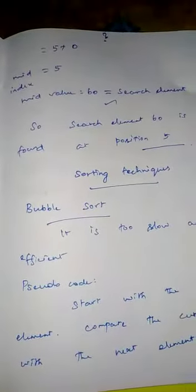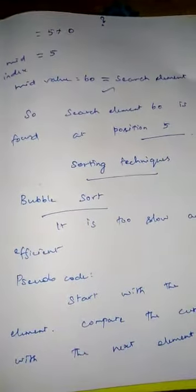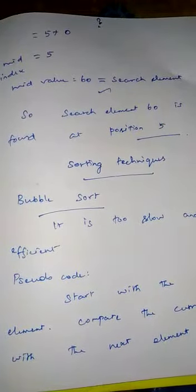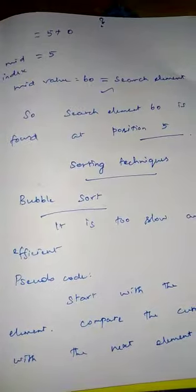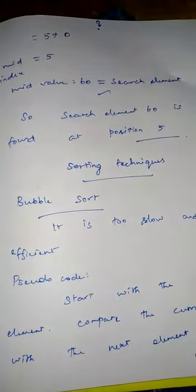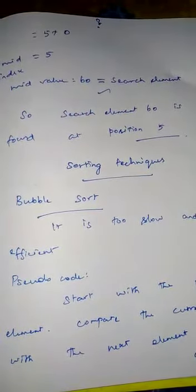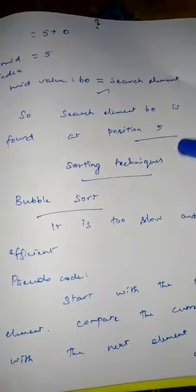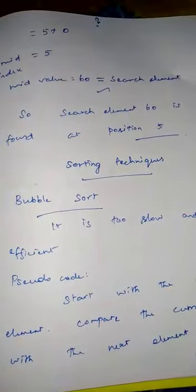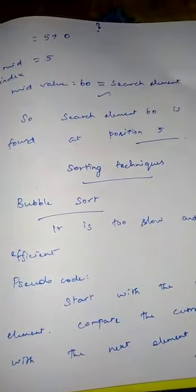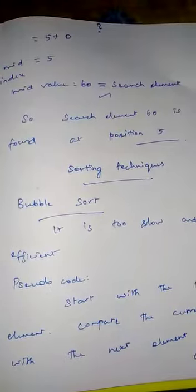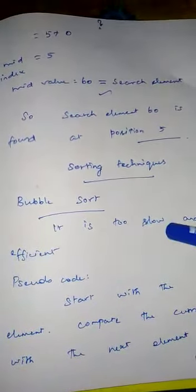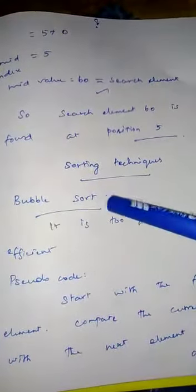Good morning students. In 12th standard computer science we are discussing the fourth chapter. In the last class we started the algorithm for searching techniques — we completed linear search and binary search. Next we are going to start with sorting techniques. The very first thing we are going to see is bubble sort.